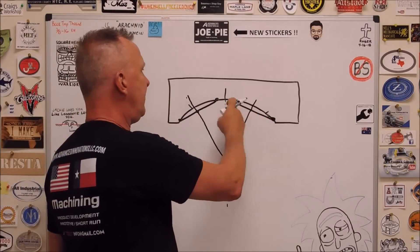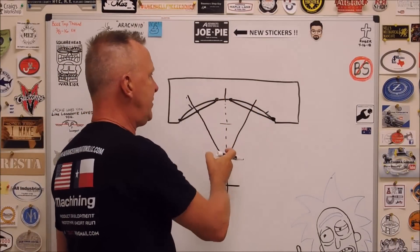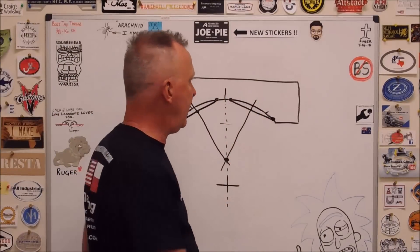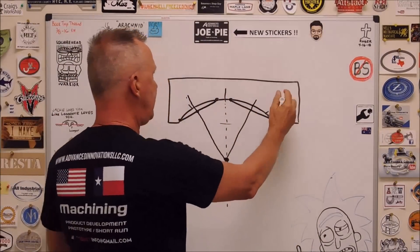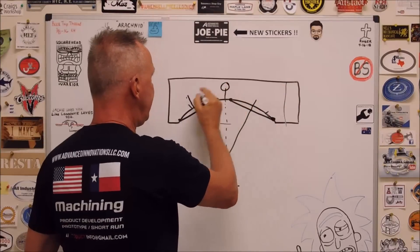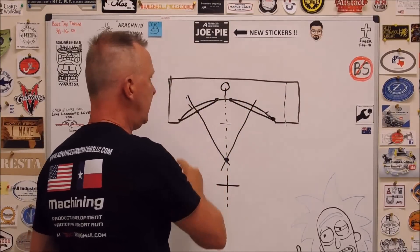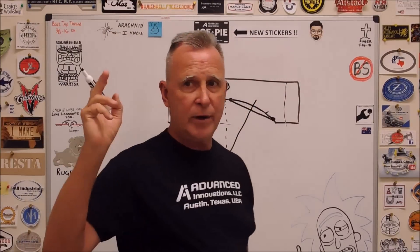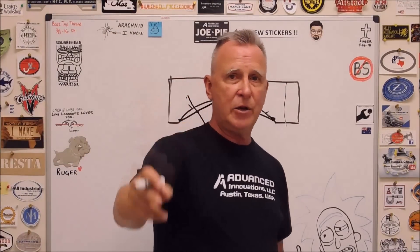I'm just going to pick up the two points, get myself on center line, and then I can true up the block based on my zero point in the middle. Let's take a walk out to the machine and take a look.